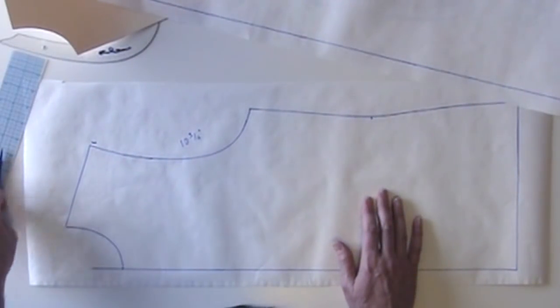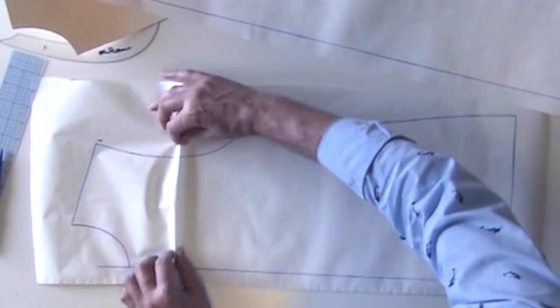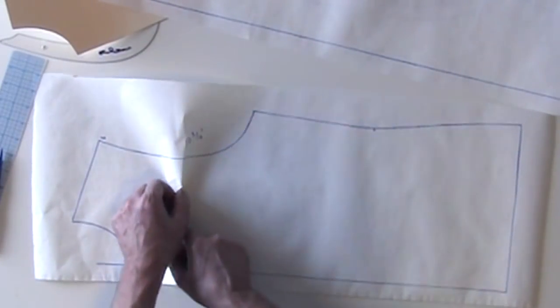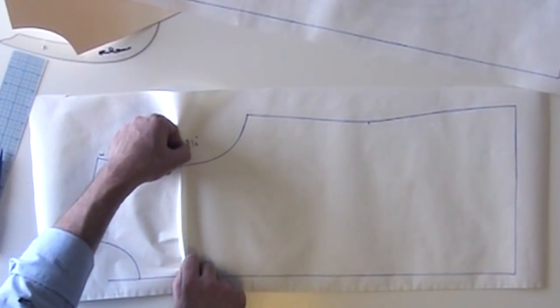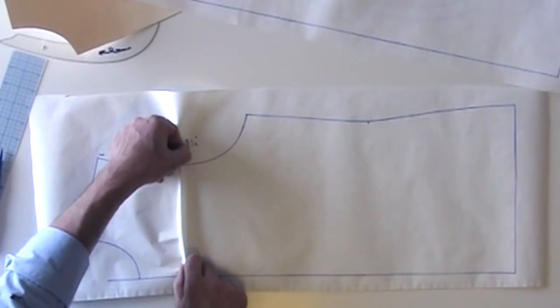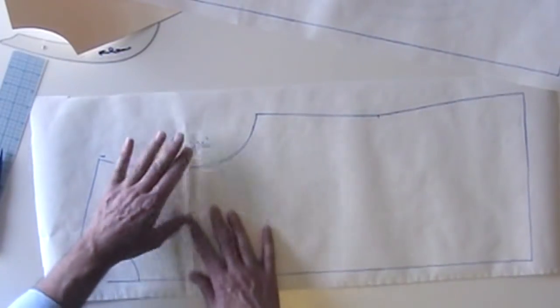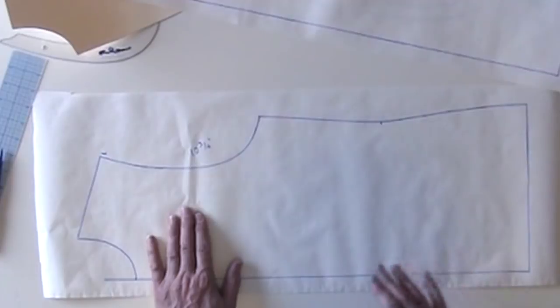You can actually shorten the whole thing like so and take that half inch out. That's frequently done in men's shirts. Men's shirts often measure slightly shorter in the front than they do in the back. You can do that.